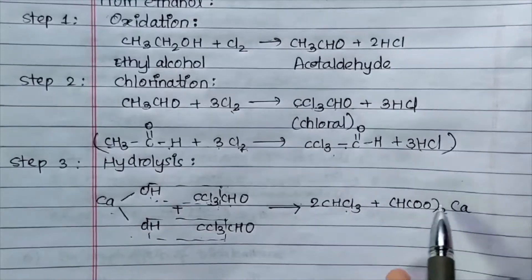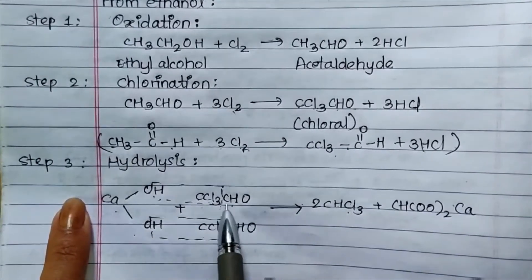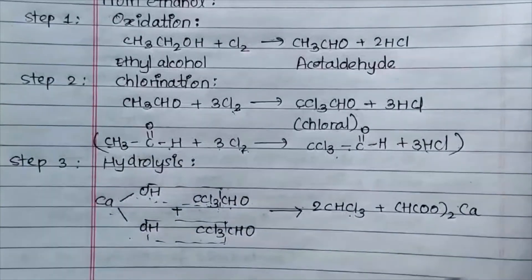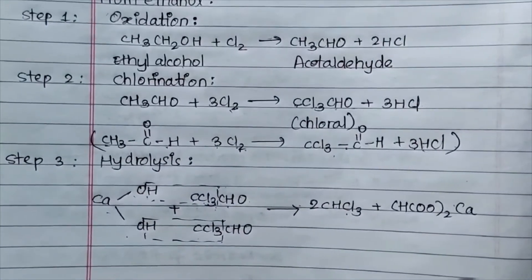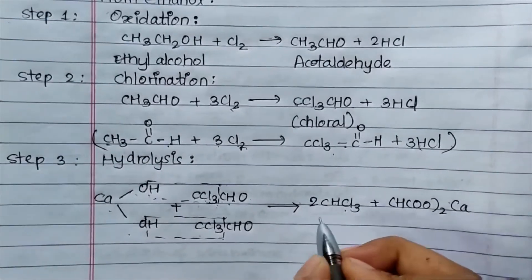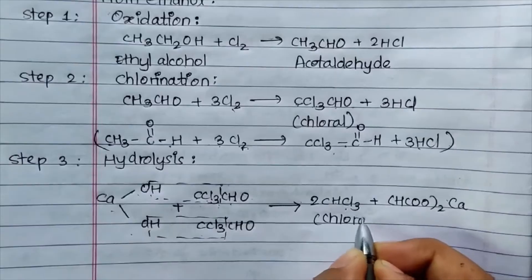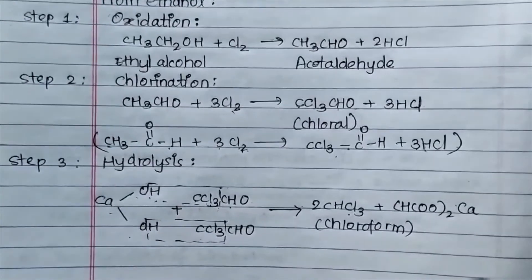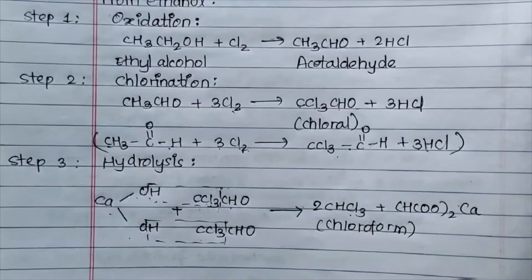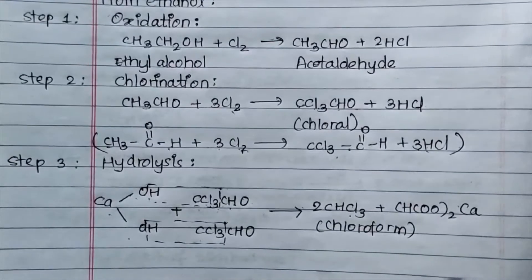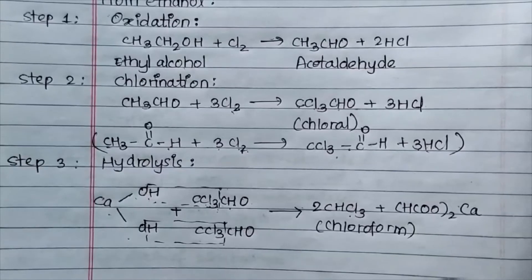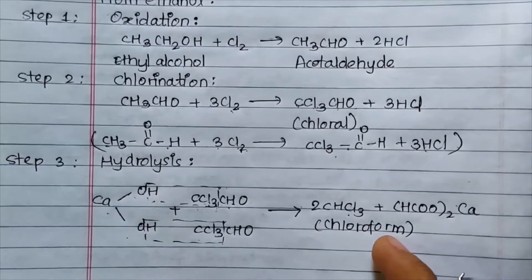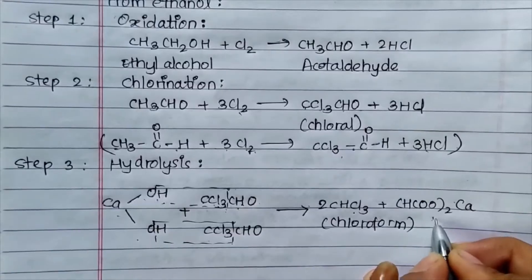In Step 3, hydrolysis takes place. CHCl3 is formed, which is chloroform. This is hydrolysis — CHCl3 is called chloroform. We obtain chloroform through the three steps: first oxidation, then chlorination, and finally hydrolysis.